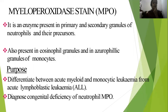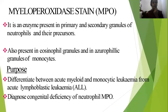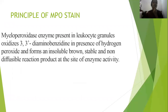The purpose of MPO staining is to differentiate acute myeloid and monocytic leukemia from acute lymphoblastic leukemia — that is, to classify acute leukemia as myeloid or lymphoid. The second purpose is to diagnose functional deficiency of the neutrophil myeloperoxidase enzyme.